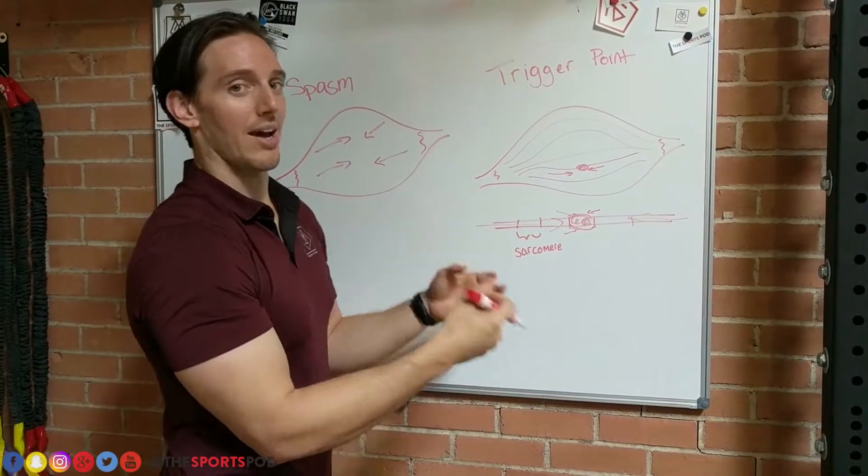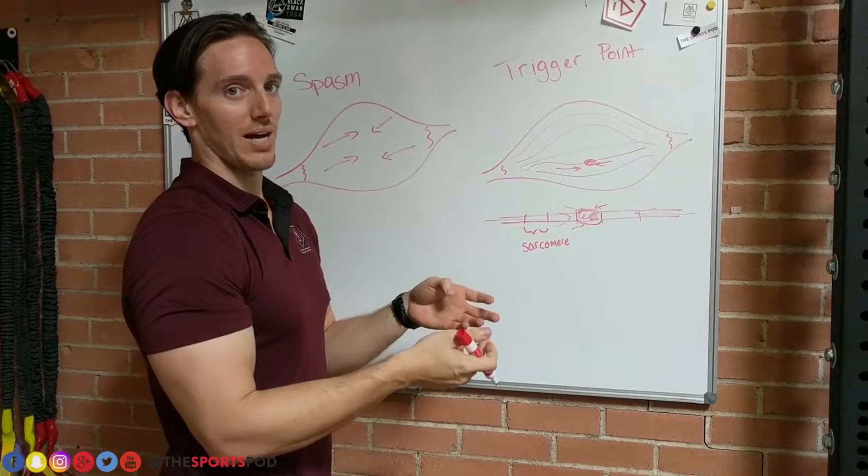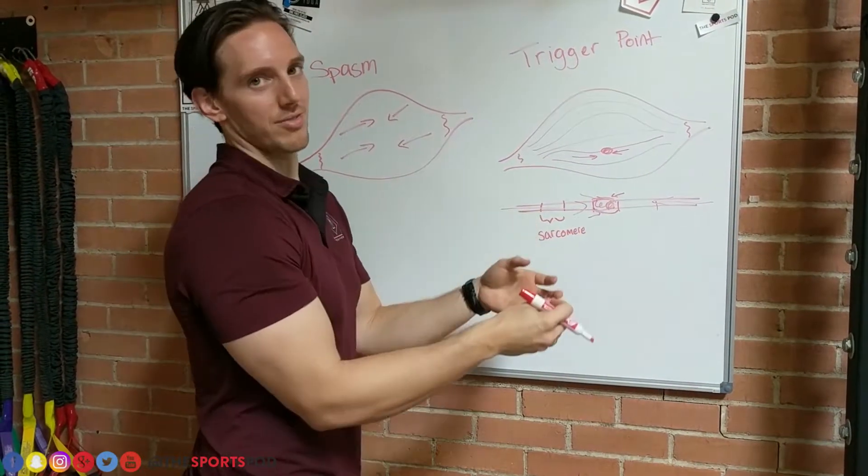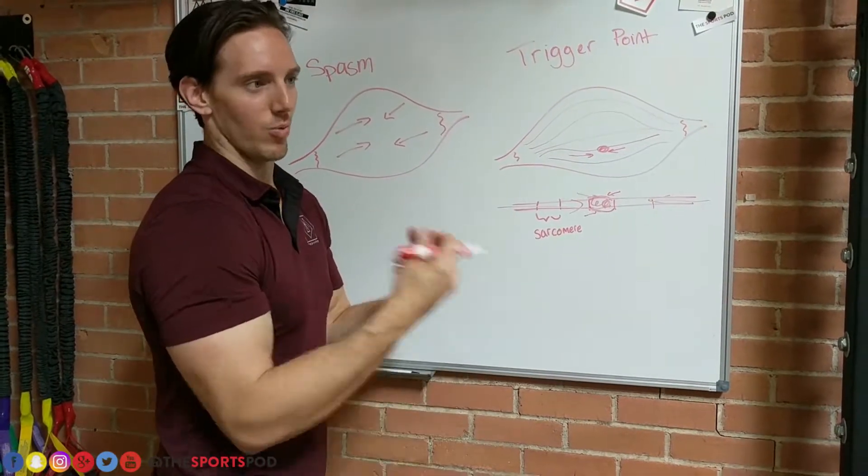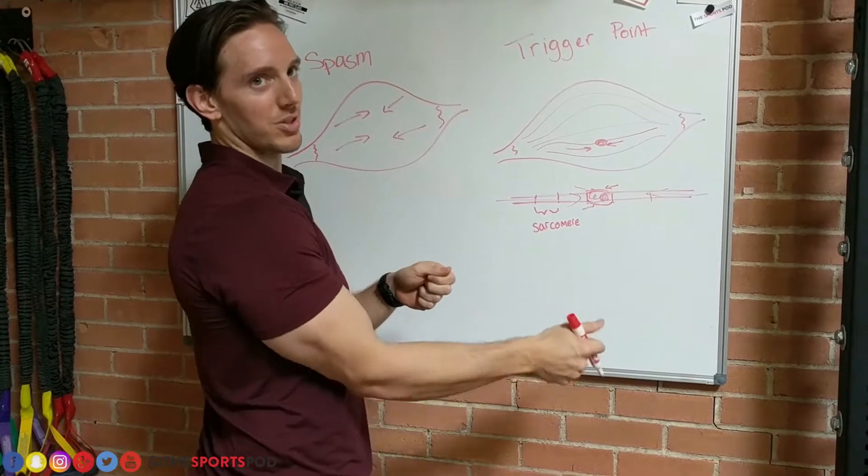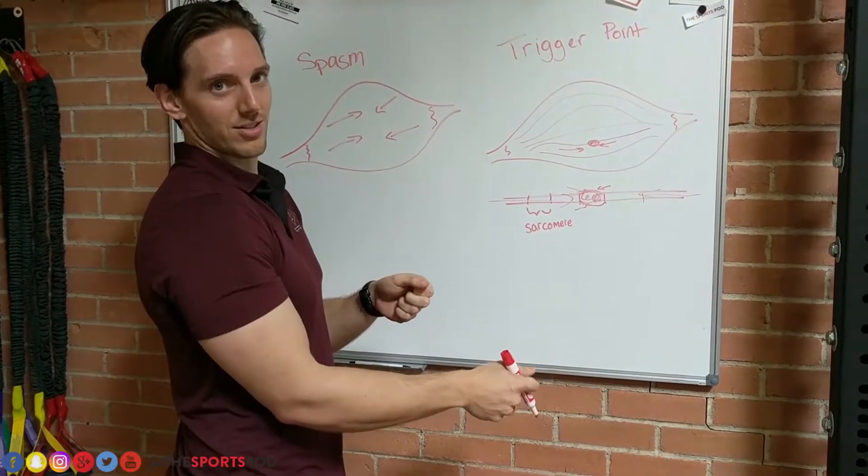You can have an active versus a passive trigger point. A passive trigger point is one that's contracted and has all this waste in here, but it isn't actively causing you pain. We can usually find those through palpation. We go in there and feel the muscle, push into it - ow, that hurts.